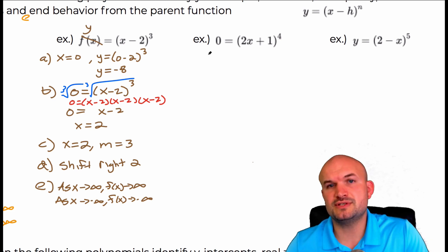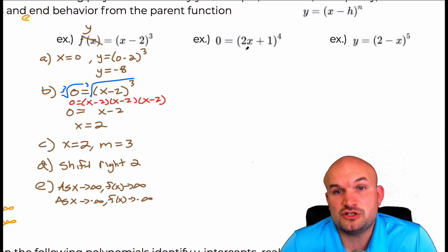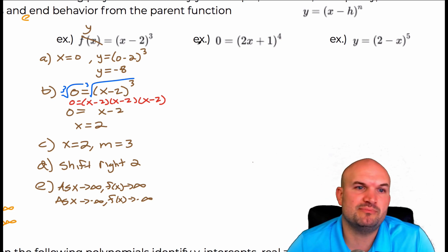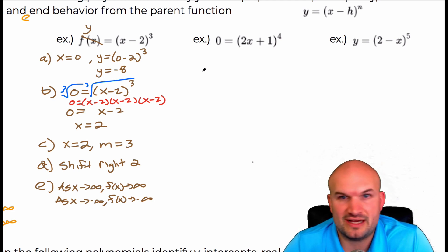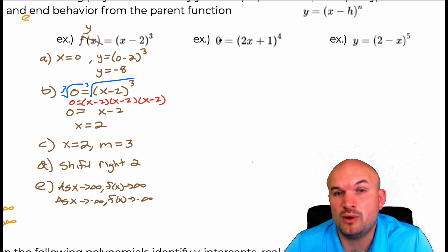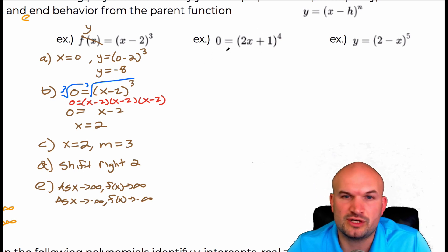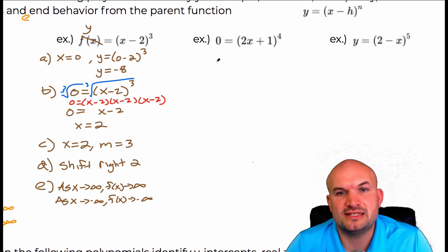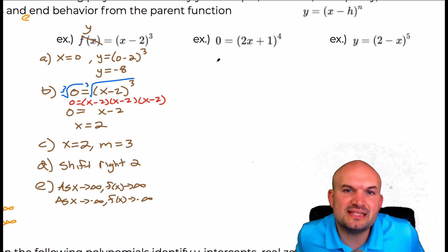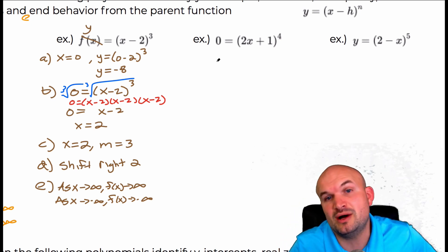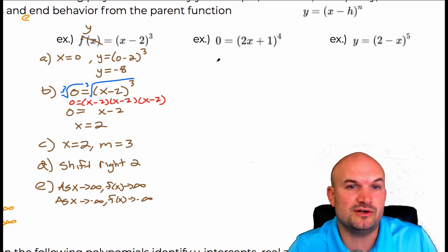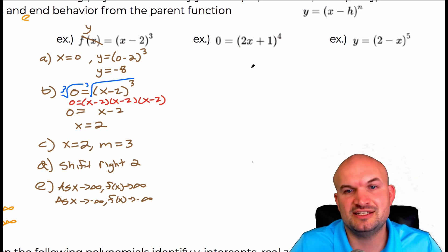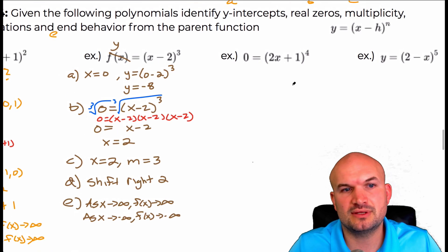Now on this one, I set it equal to zero. It's still a function — it just doesn't have a function name. So we could call it f of x, g of x, h of x, whatever we want to call it. When we have something written as an equation and we're going to use function notation, we just need to define what that is going to be. The same process applies, it's just not defined as a function for us in this case.